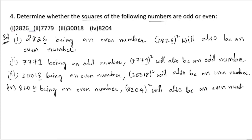From this, we can understand that if the units digit of a number is even or odd, the square of that number will give us a respective even or odd result.